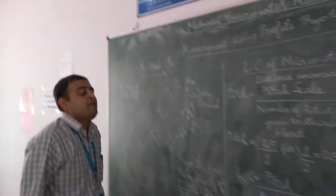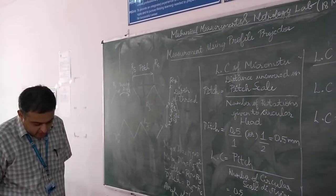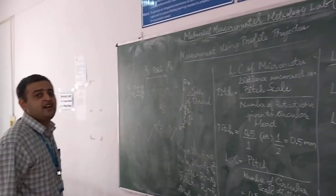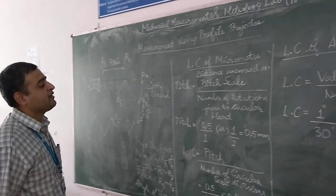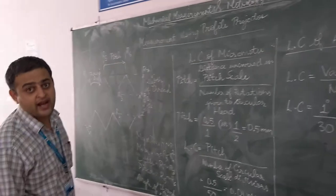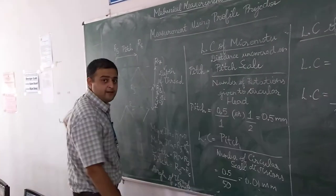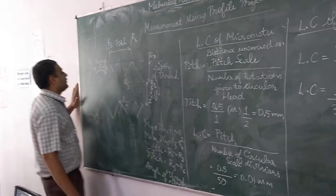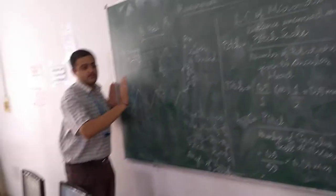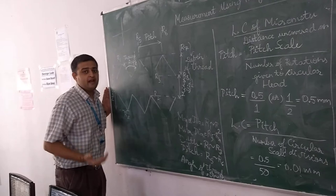This experiment involves measurement of screw thread parameters using a profile projector. We are using the optical principle of magnification to examine the threaded specimen and find various thread parameters. The main thread parameters we are going to find are the pitch, major diameter, minor diameter, depth of the thread, and thread angle. The optical projector magnifies the image of the thread specimen so that measurements can be made easily.